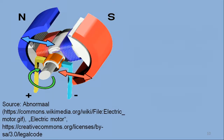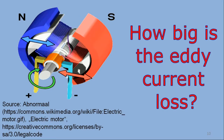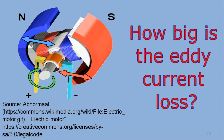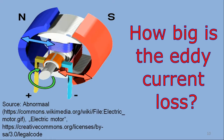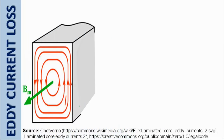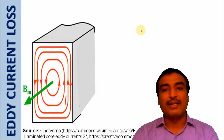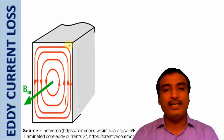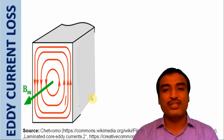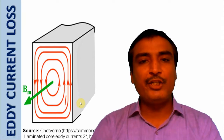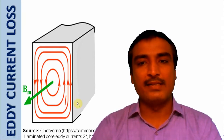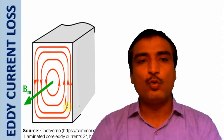The question is: how big is the eddy current loss? The answer can be illustrated as shown in this slide. In case we use a solid piece of iron to make the armature core, the resistance offered to the eddy currents would be very small due to the large cross-sectional area of the armature core. Consequently, the magnitude of the eddy currents and hence the eddy current loss would be very large.